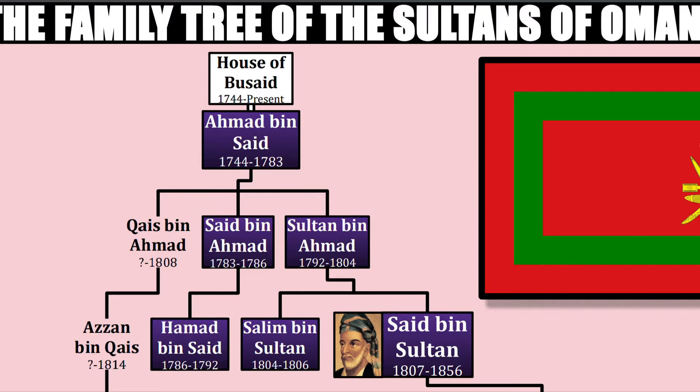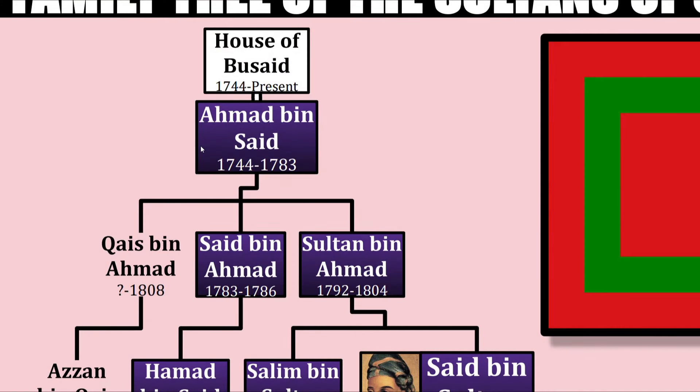We'll start with the first Sultan of Oman, Ahmad bin Saeed. Bin Saeed wasn't actually of any royal descent, but he did become a governor in the port town of Sohar. When the last Imam — or rather the last to really hold serious power — Saif bin Sultan II died, the Persians began to encroach on Oman's territory for a short while, until they were actually massacred by bin Saeed.